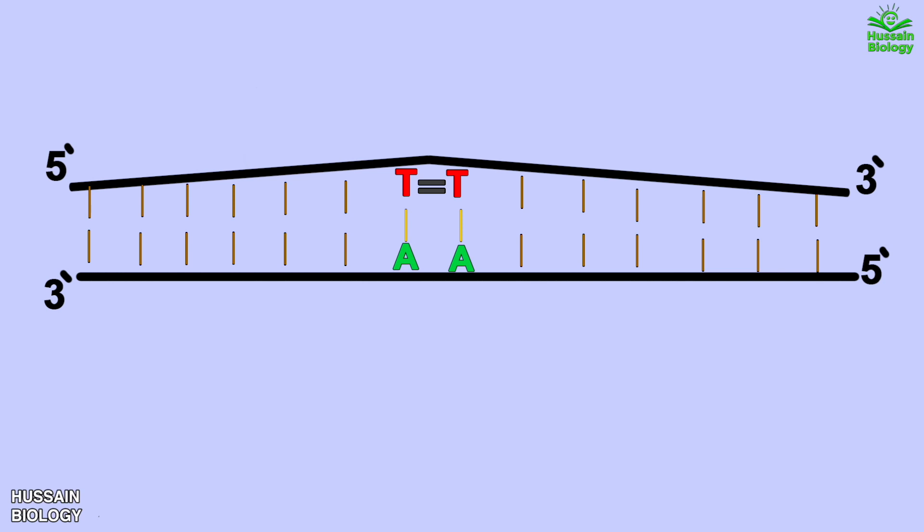First of all we see we have 2 dimer proteins, that's UVR A dimer and UVR B dimer as shown in the diagram. The UVR A has higher affinity for damaged DNA and UVR B shows no affinity at all. So it's by the help of UVR A protein which recruits the UVR B towards the DNA.